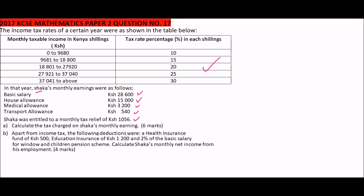We are required to calculate the tax charged on Shaka's total earnings in part (a). In part (b), apart from income tax, other deductions were made: health insurance fund of five hundred shillings, education insurance of twelve hundred shillings, and two percent of basic salary for the widows and children pension scheme. We then find Shaka's net income.